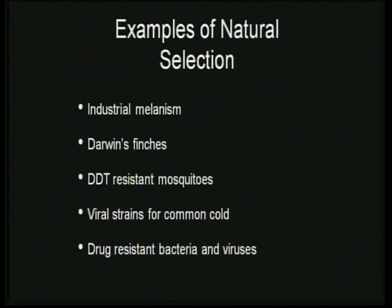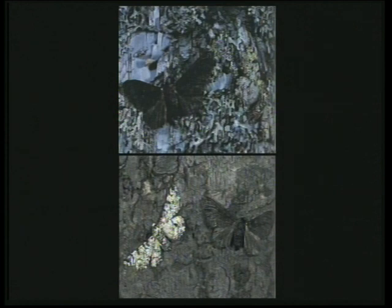When discussing natural selection, we took the example of industrial melanism. We discussed how the population of moths in England changed over time because of the industrial revolution. Because of pollution from industries, the bark of trees changed color, becoming dark — almost black.